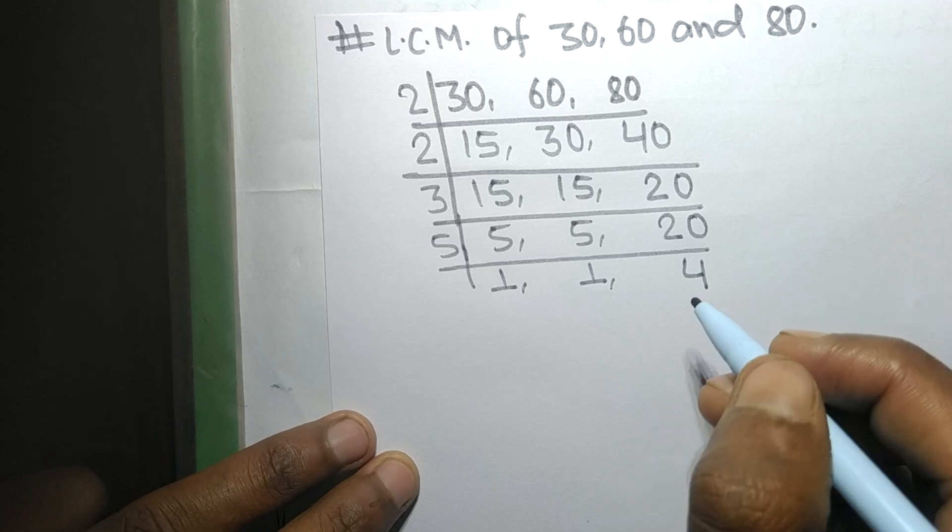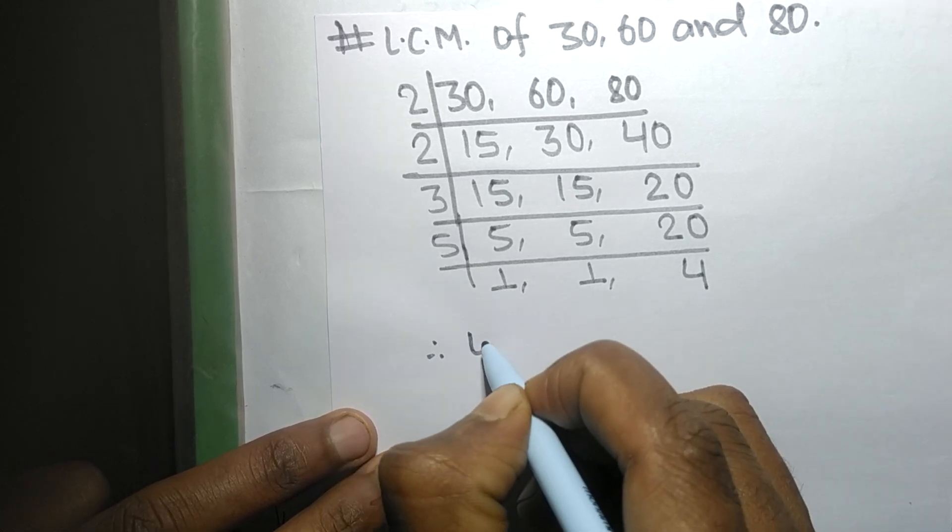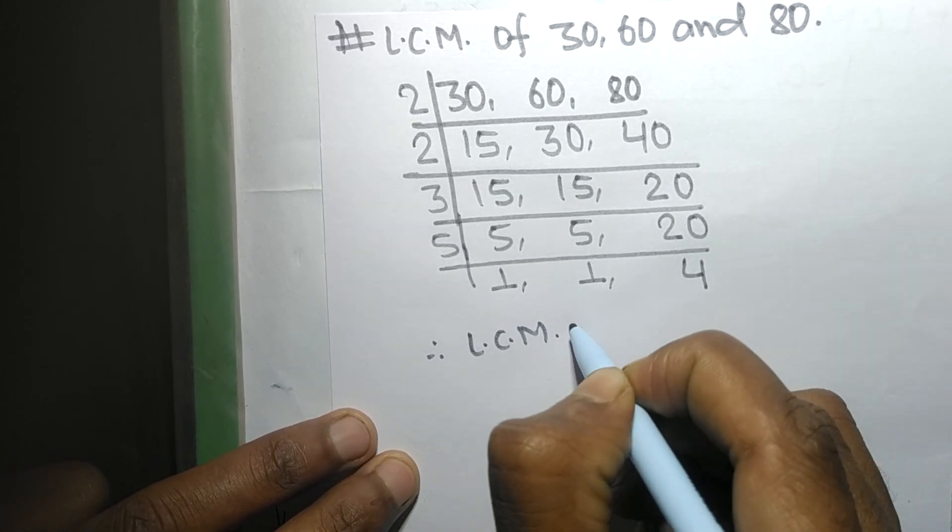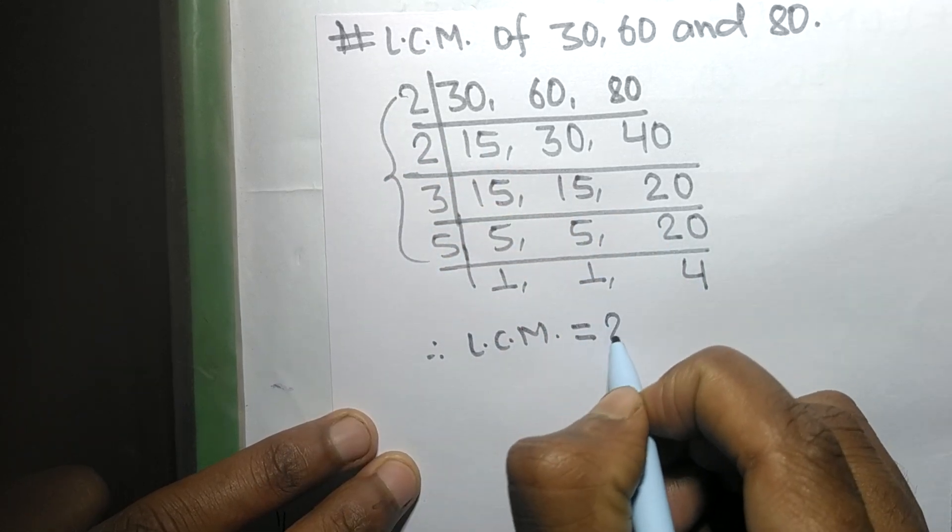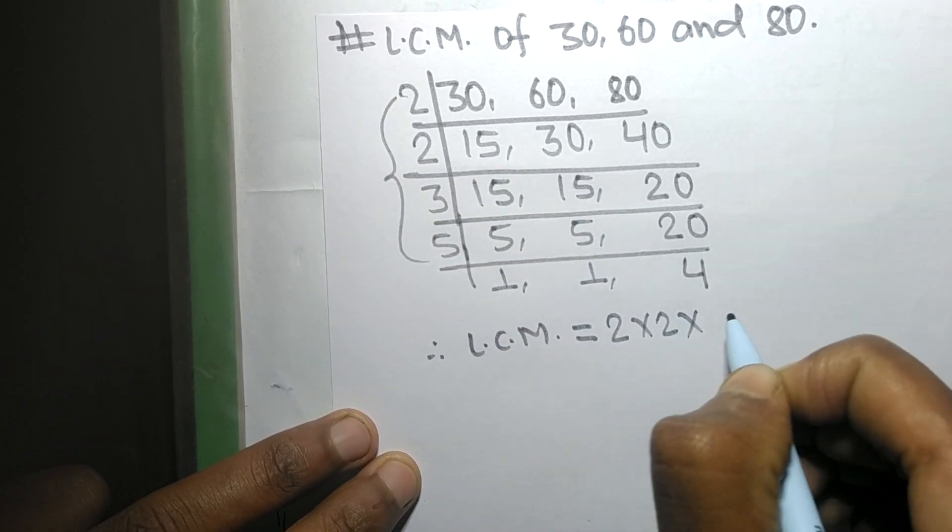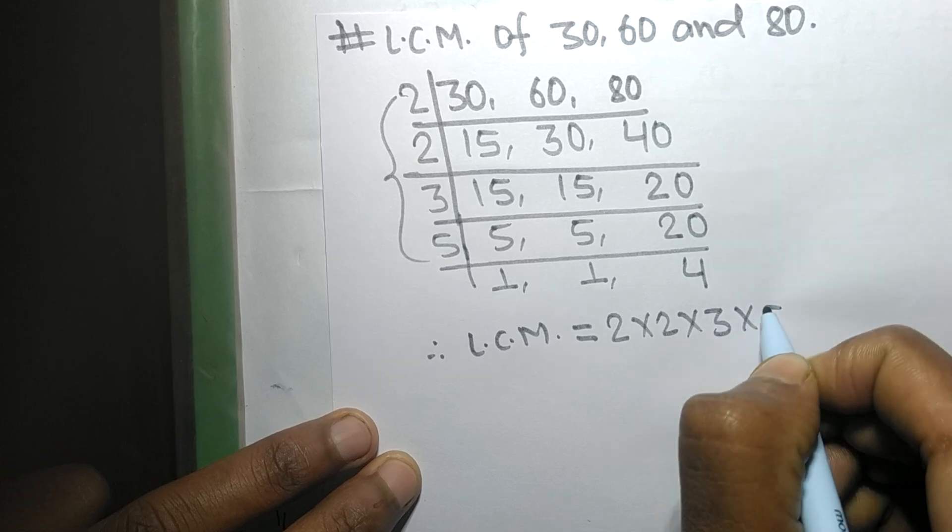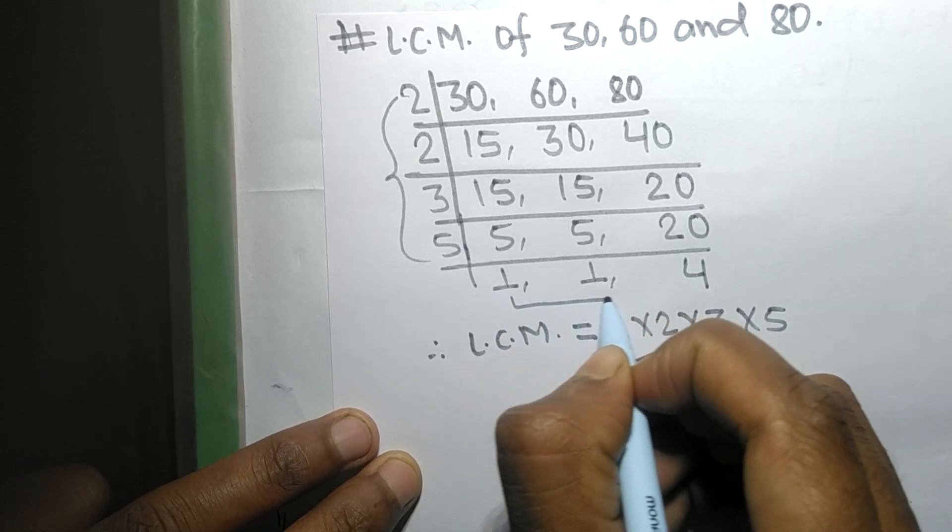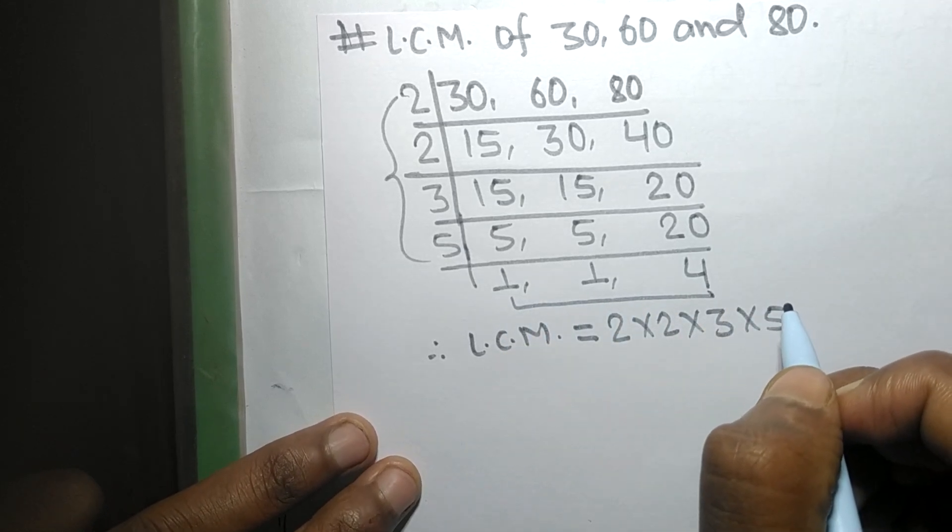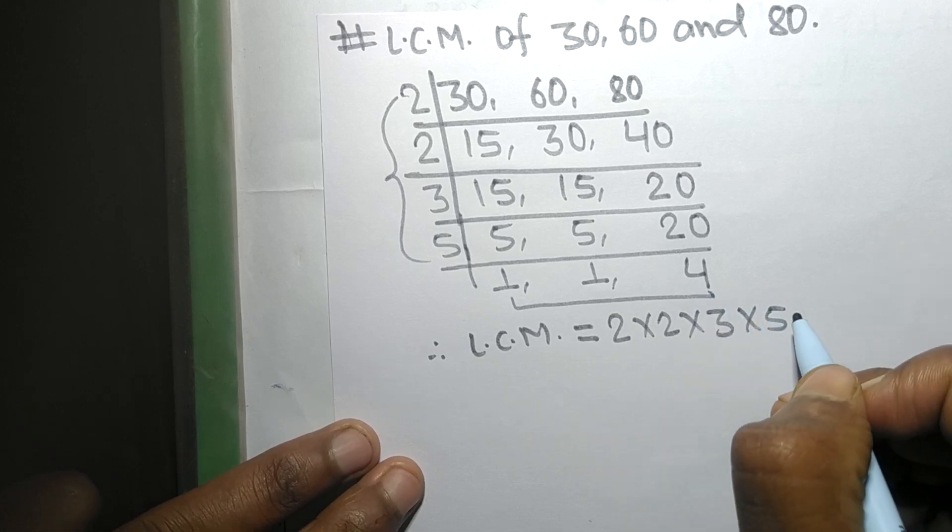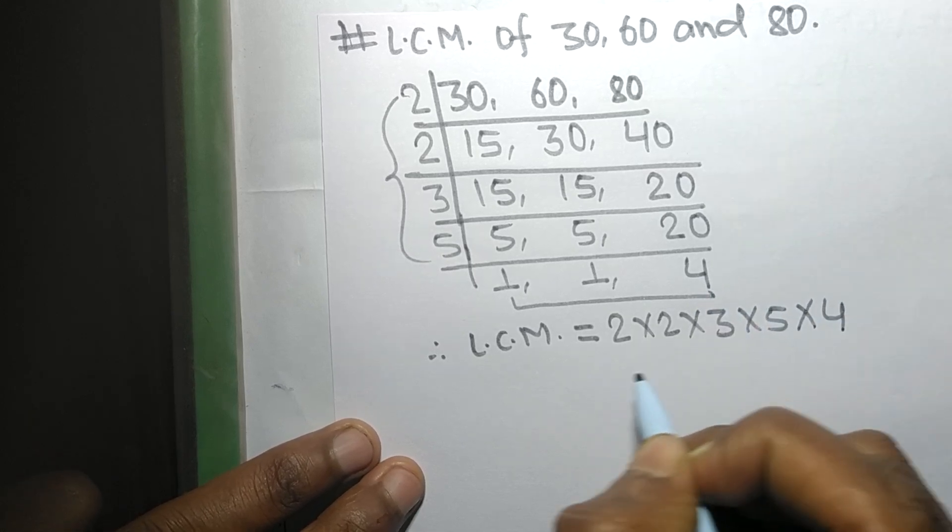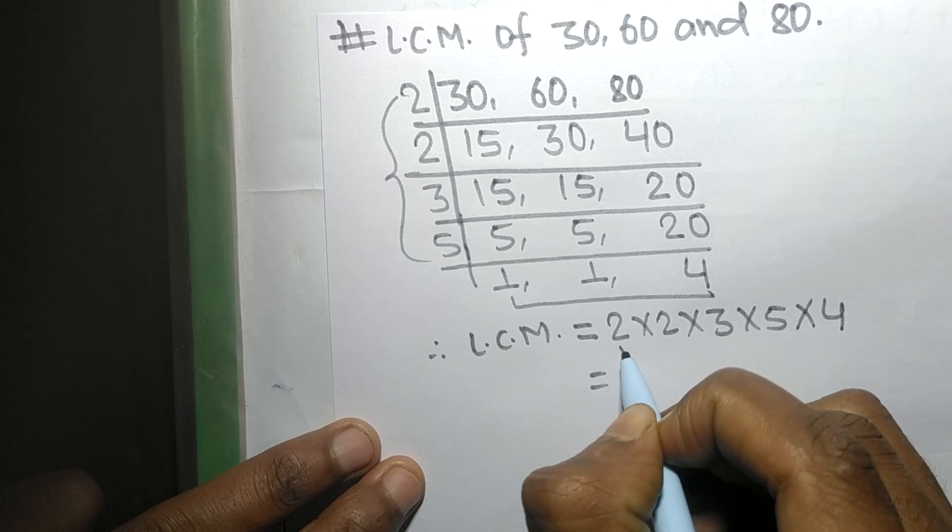So its LCM is equal to from this side it is 2 times 2 times 3 times 5, and from this side we choose the numbers greater than 1 that is 4, so multiplied by 4.